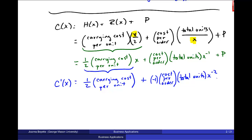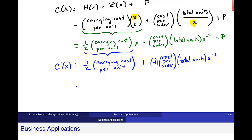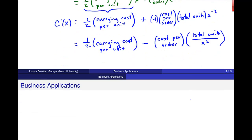So then next I just want to simplify this. So this is 1/2 carrying cost per unit minus the cost per order times, and maybe I'll put this total units over x squared. And now I want to go ahead and find critical values in this general case.